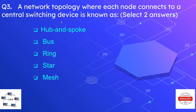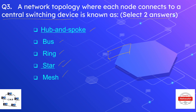Question number three: a network topology where each node connects to a central switching device is known as — select two answers. Options are hub and spoke, bus, ring, star, and mesh. The correct answers are hub and spoke, and star.